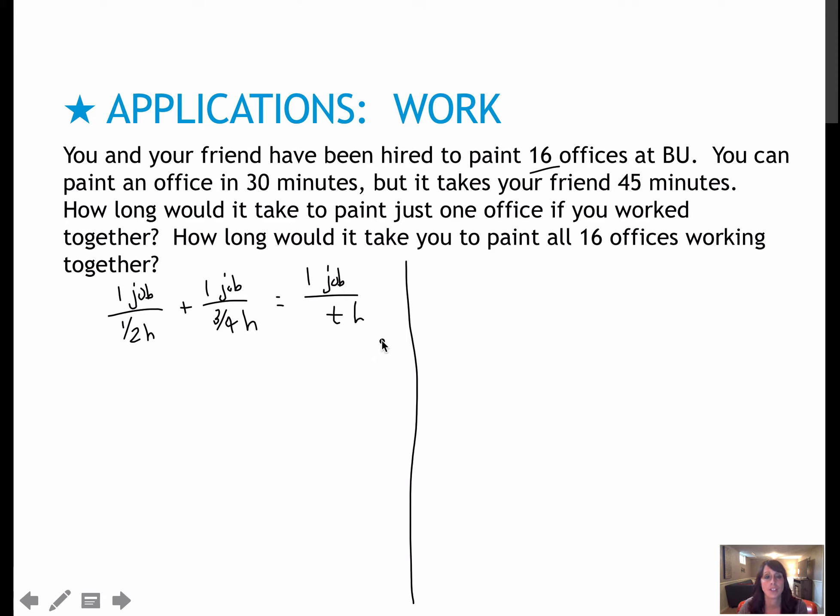Now I have to solve this. This one's a little different because I've got fractions within fractions. When I'm dividing by one-half, it's the same as multiplying by two. So I get 2 plus four-thirds equals one over T. To avoid these fractions, I'm going to multiply everything by 3T. One divided by one-half is like one times two over one, multiplying by the reciprocal, which gives me two. One divided by three-fourths gives me one times four-thirds. That's where I got those two values.